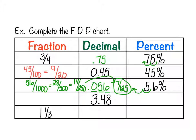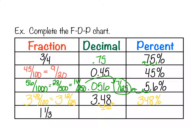For 3.48 as a percent — moving the decimal two spots to the right gives 348 percent. As a fraction, the 3 out front is the whole number, and we write 48 over 100. Reducing by 4: 48 divided by 4 is 12, and 100 divided by 4 is 25, so this reduces to 3 and 12/25.